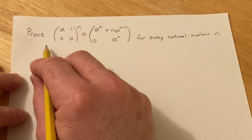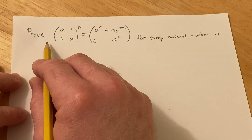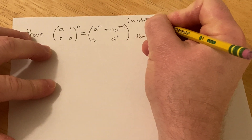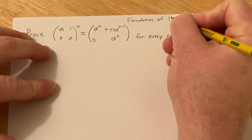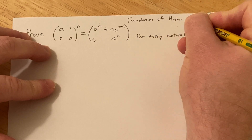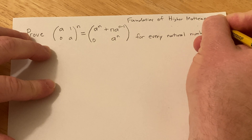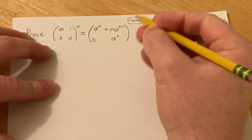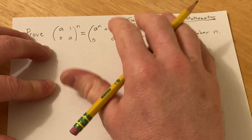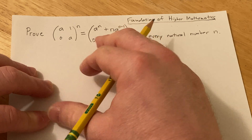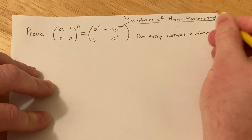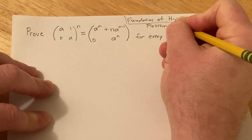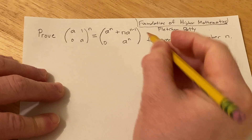Hi, in this video we're going to do a problem from a book by Fletcher and Patty. It's called Foundations of Higher Mathematics. And this is a book that people read and buy because they're trying to learn how to make the next step to go from basic calculus to writing proofs. And this one is by Fletcher and Patty. I'll try to leave a link in the description.